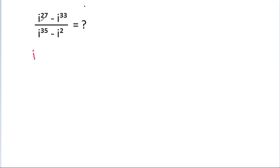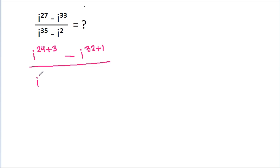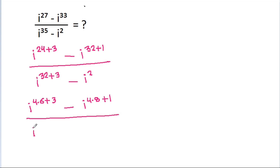So, iota 27 is 4 times 6 minus 3, and iota 33 is 4 times 8 minus 1. Iota 35 is 4 times 8 minus 3, and iota squared remains as iota 2.